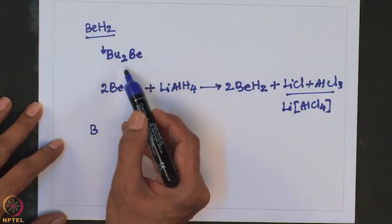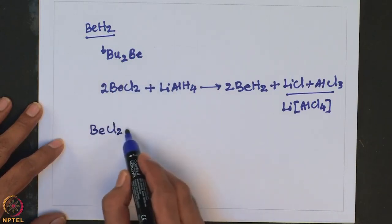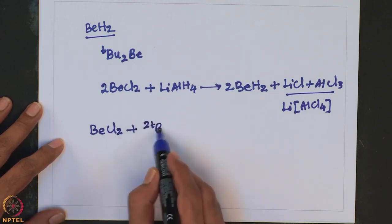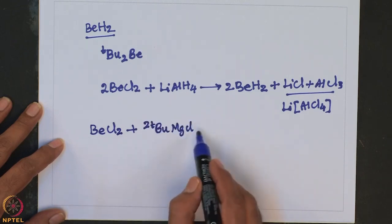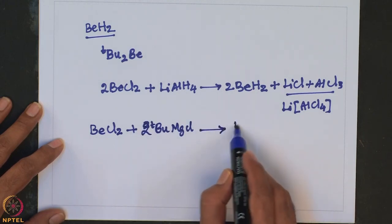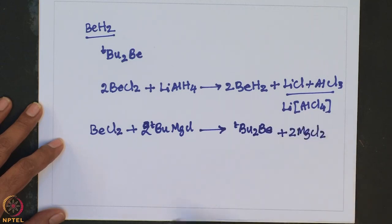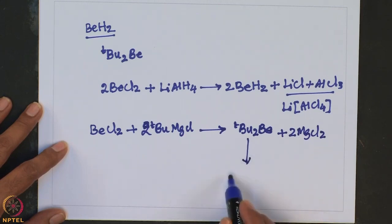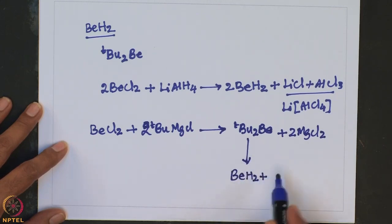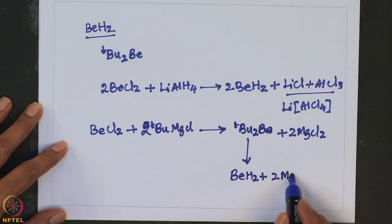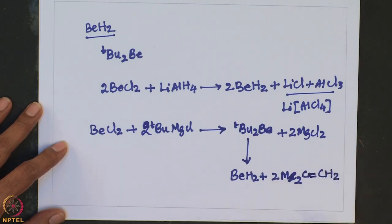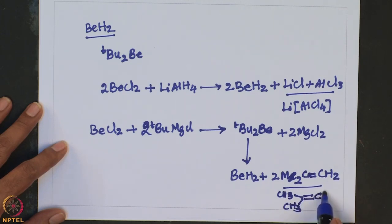To prepare di-tert-butyl beryllium, BeCl2 is treated with the appropriate Grignard reagent, forming the product plus 2 MgCl2. On pyrolytic decomposition, this gives BeH2 along with isobutylene as the organic byproduct, yielding beryllium hydride.